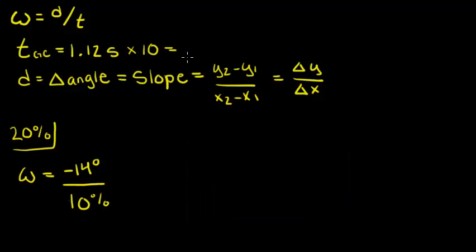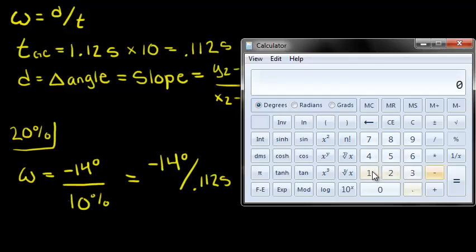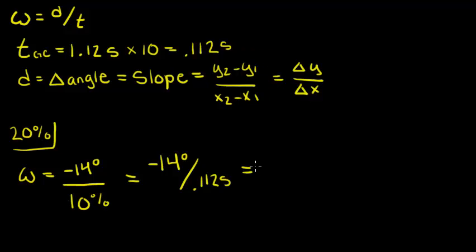This gives us 0.112 seconds. So, we will rewrite this as negative 14 degrees over 0.112 seconds. This gives us negative 125 degrees per second as our angular velocity. We know that this is when the hip is extending due to the slope of the tangent.